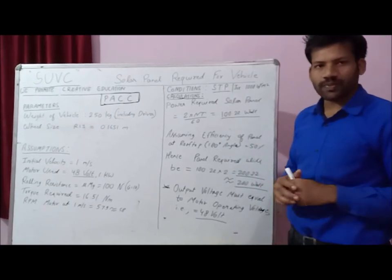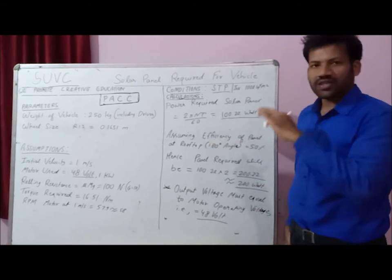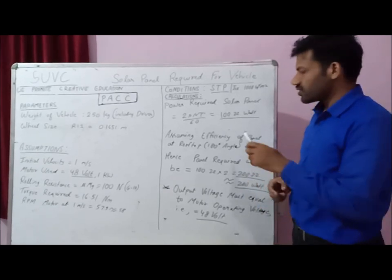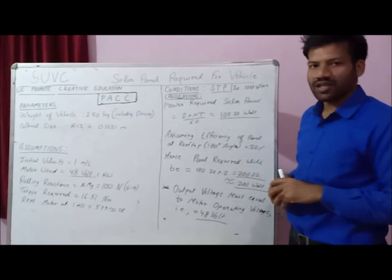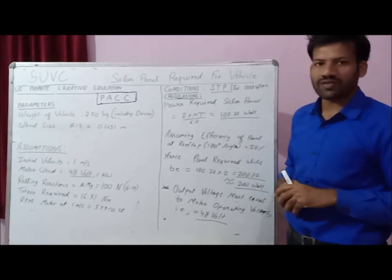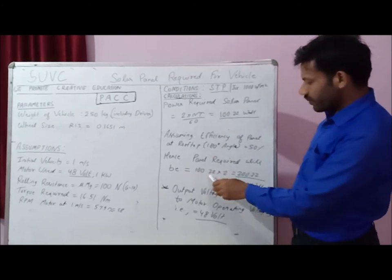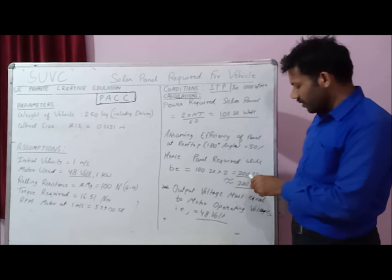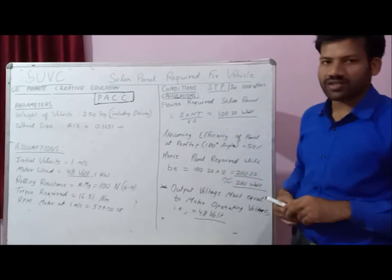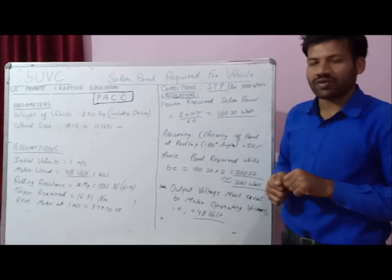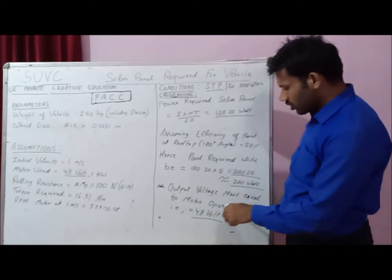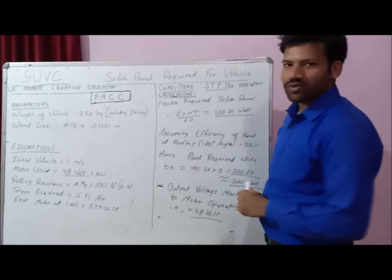Does that mean you purchase a 100-watt panel? No. Many teams are mounting the solar panel flat on the rooftop of the vehicle. At that inclination of 0 degrees — or 180 degrees from the rooftop — you will get only 50% efficiency from your solar panel. So multiplying 100.32 by 2 to account for the 50% efficiency gives 200 watts. Also note that the output voltage of your solar panel must be synchronized with the motor operating voltage of 48 volts.